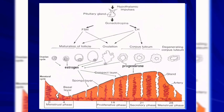Under progesterone influence, the endometrium enters the secretory phase, characterized by tortuosity of the glands, thickening of the compact and spongy layers, increased edema, more fluid, and greater vascularity. Glycoprotein secretion occurs, which is important for nutrition of the oocyte and the developing embryo.